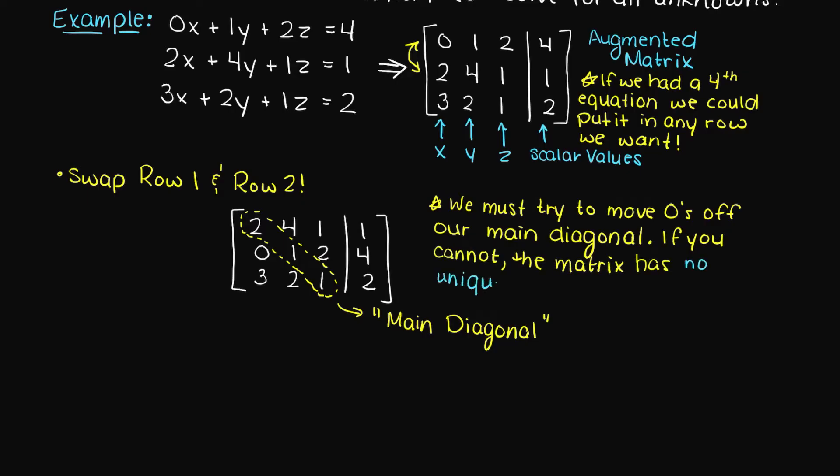So if you have a zero on your diagonal, you have to try to switch that row with another row. If you cannot eliminate all the zeros on the diagonal of your matrix, then that means that your matrix is singular and has infinitely many solutions.